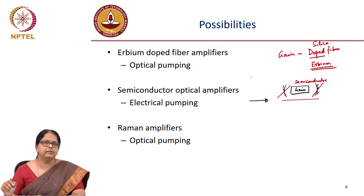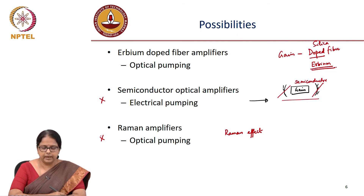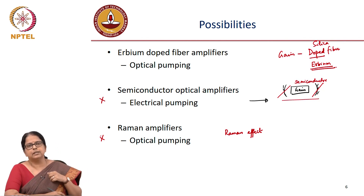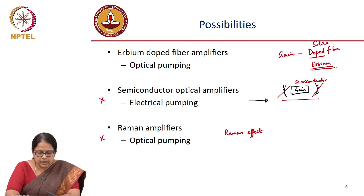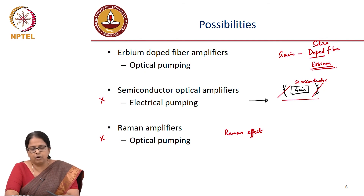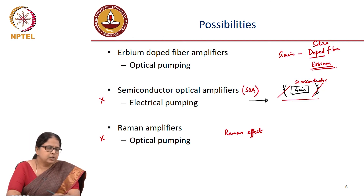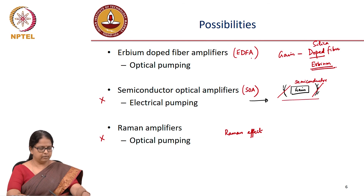The third option is a Raman amplifier, where the Raman effect is used for amplification. We will not go into the details of semiconductor optical amplifiers and Raman amplifiers, simply because what is most commonly used and satisfies all the specification requirements is the erbium doped fiber amplifier. There are special conditions where a Raman amplifier or an SOA is used, but those are very specialized conditions. Most optical communication systems use erbium doped fiber amplifiers. We will be talking about erbium doped fiber amplifiers, called EDFA — EDFAs are the most common optical amplifiers.